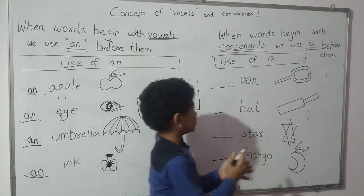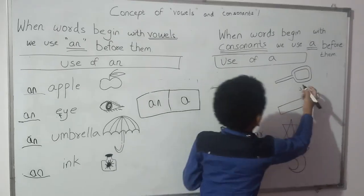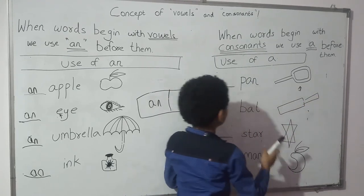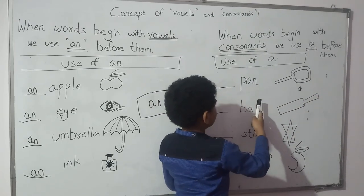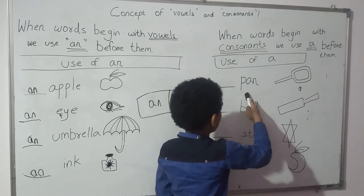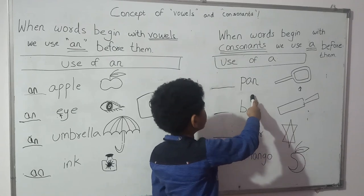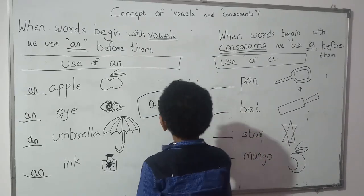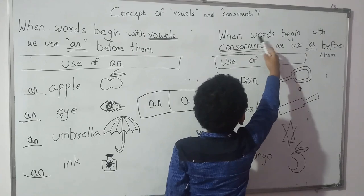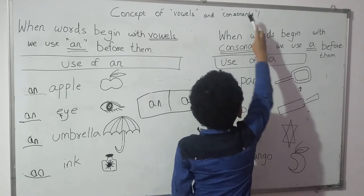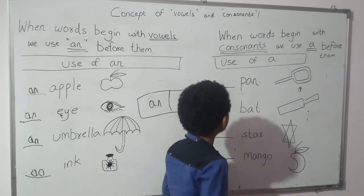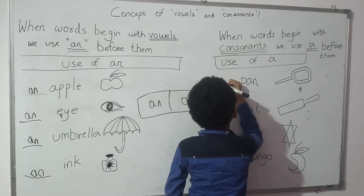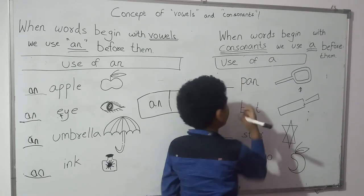This is a PAN. This PAN word starts from P, and P is a consonant. So we have to write here A PAN.